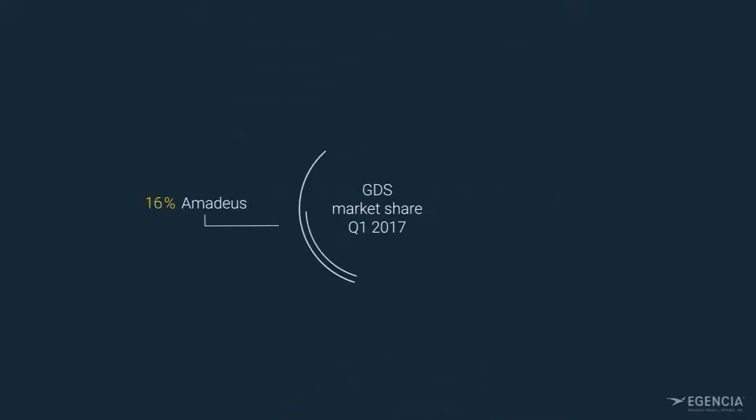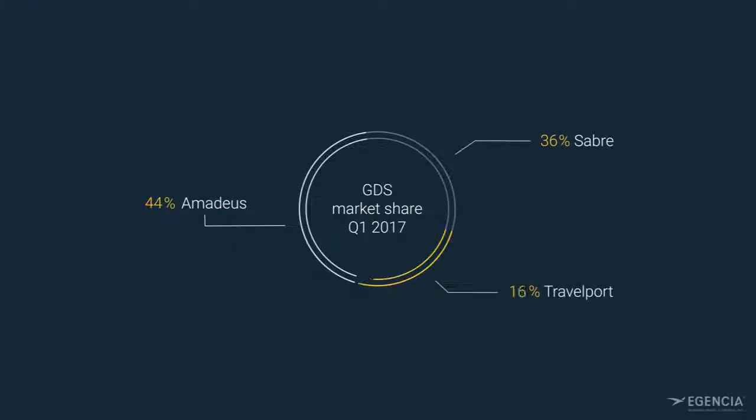A GDS is a centralized electronic platform that provides travel related transactions between travel providers and travel sellers. Today, three companies — Amadeus, Sabre, and Travelport — hold the bulk of the global market.